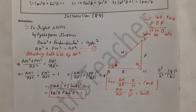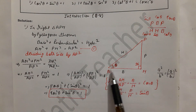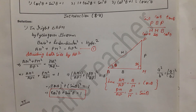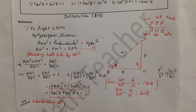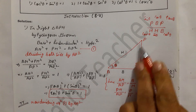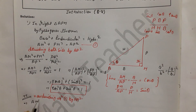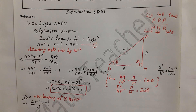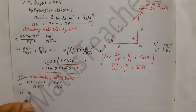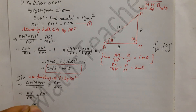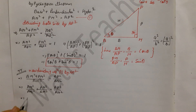Next, for the second identity we divide the Pythagorean equation by AM² (base²). This gives: AM²/AM² + PM²/AM² = AP²/AM². The first term cancels to 1, so we get: 1 + (PM/AM)² = (AP/AM)².